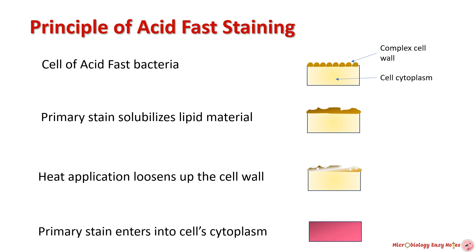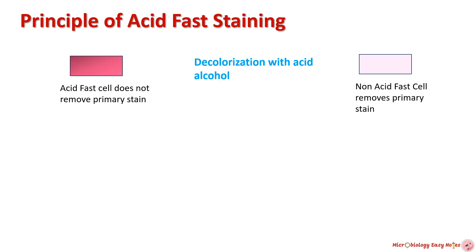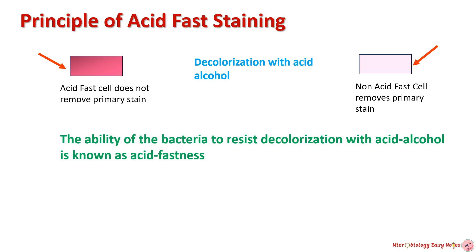Once the stain goes into the cell, the cell will not de-stain or decolorize with acid alcohol, while non-acid fast cells get decolorized and lose the primary stain easily, becoming colorless, because they lack lipid and complex material in their cell wall. This ability of the bacteria to resist decolorization with acid alcohol is known as acid fastness.